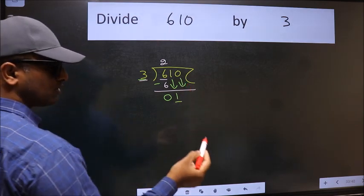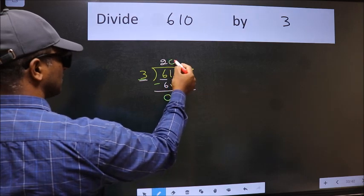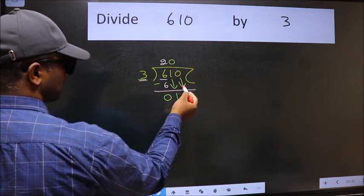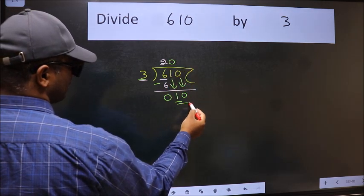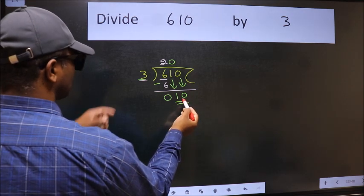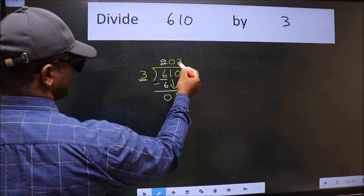And the rule to bring down the second number is we should put 0 here. Then only we can bring down this number. Now 10. A number close to 10 in the 3 table is 3 3's 9.